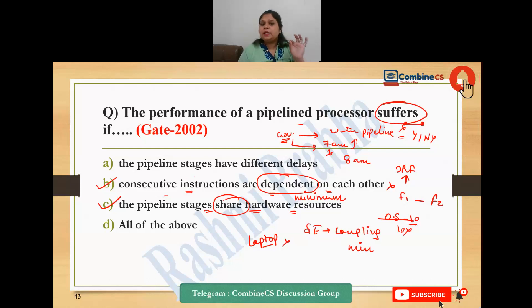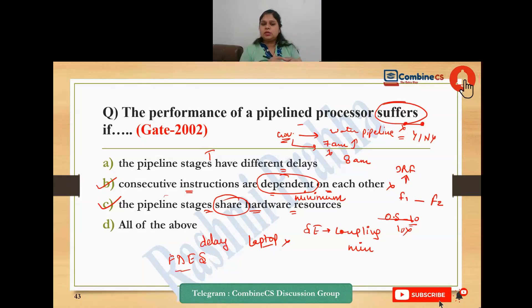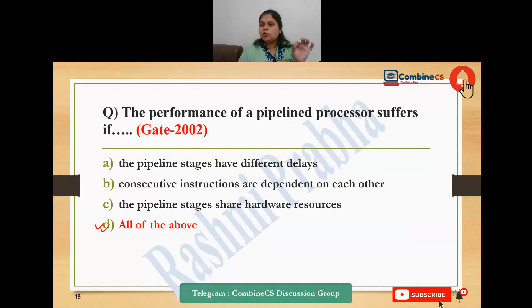Third point: pipeline stages have different delays - this is also a true statement. Every pipeline stage can execute with a different delay. For example, in the next topic: fetch, decode, execute, and store are the four steps. All stages have different delays - fetching an instruction may take a long time to load from main memory to CPU, or a high priority process may delay it. So the performance of the pipeline processor depends on all three things - the answer is all of the above.